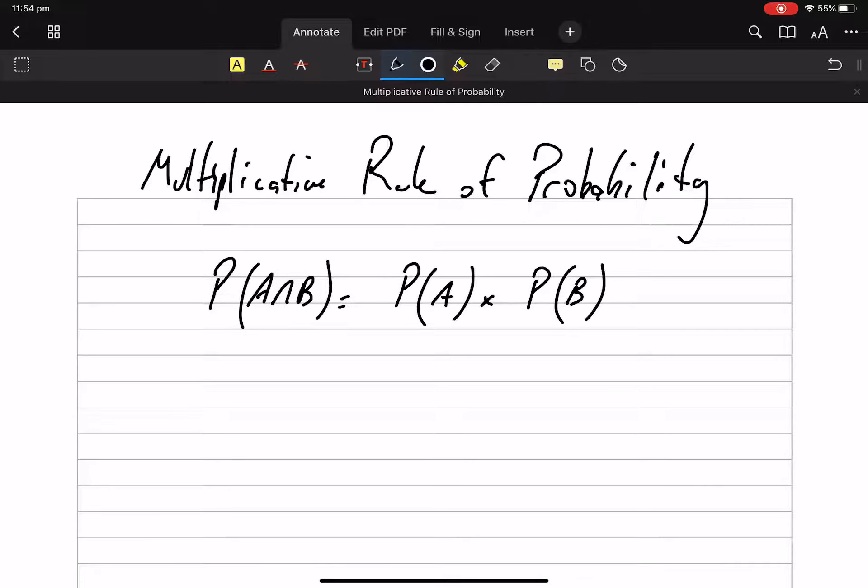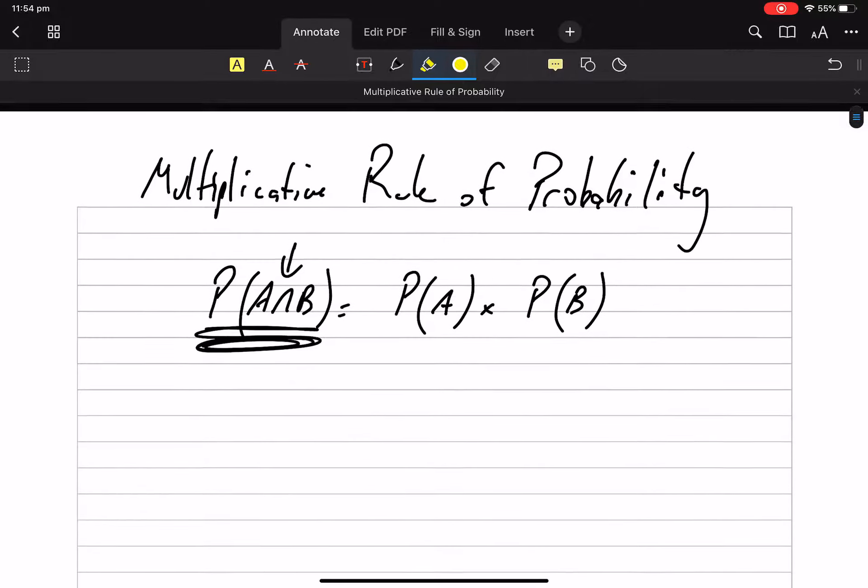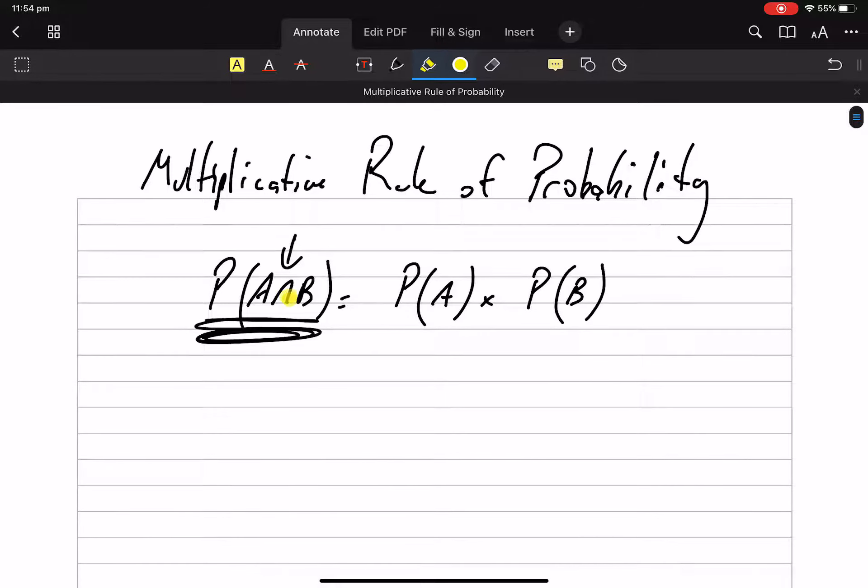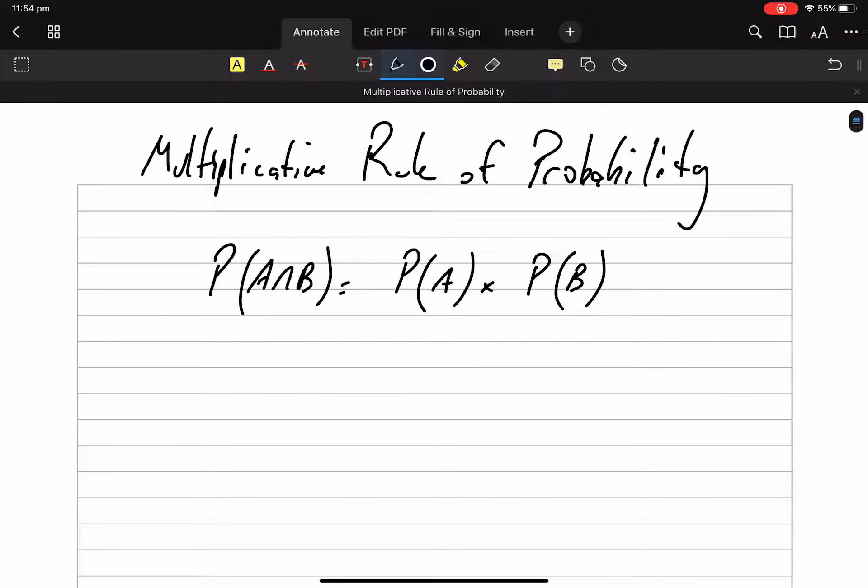Multiplicative rule of probability. This says the probability of A and B. That symbol there is and. Probability of A and B. And is times. Or is plus, and is times. Multiplicative rule of probability. And is times. Let's not say that again. Okay, let's go.